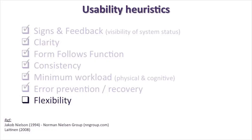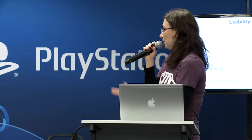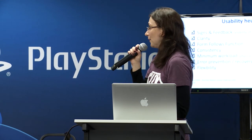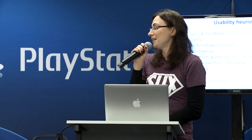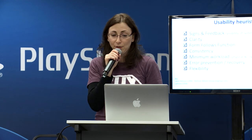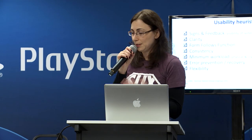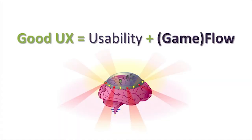Error prevention and recovery is also very important in the game, and flexibility — making sure that players can customize everything — is also very important for accessibility. These are the seven heuristics I'm using the most. We can obviously debate about this. But that's the easy part. There's a lot of knowledge behind this thing. It's easier to come up with heuristics for usability.